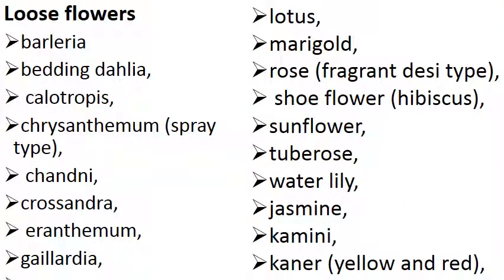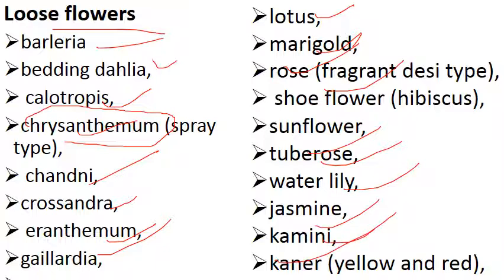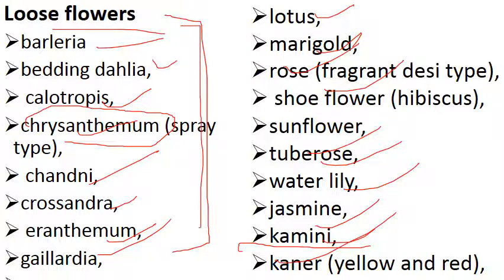You can't remember all cut flowers because there is a huge list, but you can remember loose flowers. Revise the list once or twice so it fits in memory. Loose flowers include: Baryllaria, bleeding heart, Calotropis, Chrysanthemum, Anthurium, Rose, Chandini, Crossandra, Erythrina, Gardenia, Lotus, Marigold, Shoe flower, Sunflower, Tuberose, Water lily, Jasmine, Curry, and Carnation. You should also know the scientific names, varieties, and propagation of these flowers — all found in my floriculture or ornamental horticulture playlist on Agri Silvi.